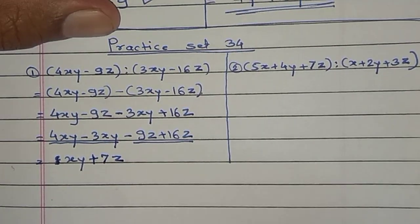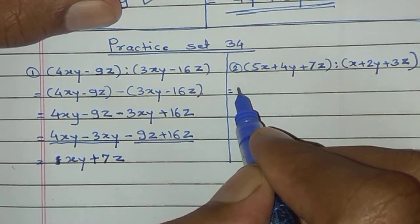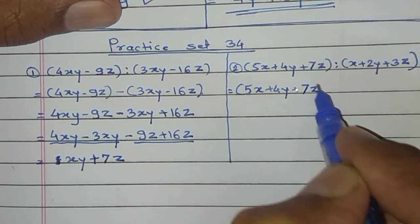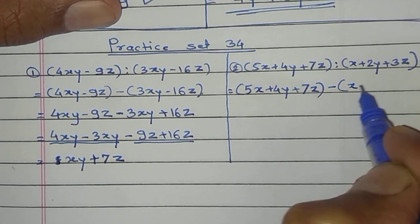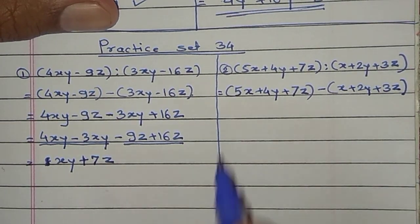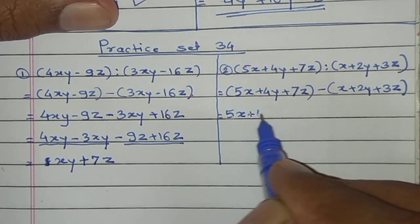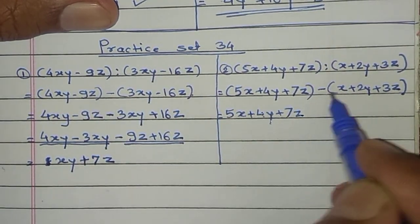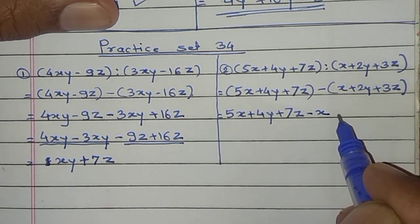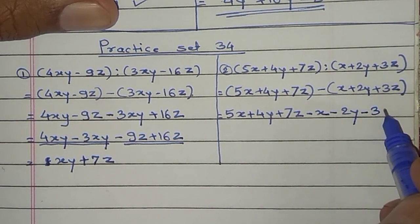Coming to example number 2: subtract the second expression from the first. Write it: 5x plus 4y plus 7z, minus x plus 2y plus 3z. Remove the bracket. Here plus sign is there, so no sign changes: 5x plus 4y plus 7z. Because of this minus sign, all signs change: plus x becomes minus x, plus 2y becomes minus 2y, plus 3z becomes minus 3z.